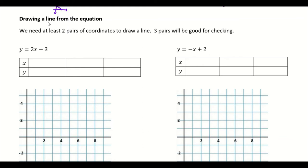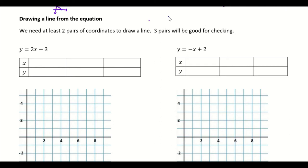To draw a line from an equation, we need at least two pairs of coordinates. With only one point, you could draw infinitely many lines with different gradients through it. So I need at least two points to connect and get a unique straight line. I encourage you to use three pairs of coordinates as a check — if the three points don't form a straight line, you know one of them is wrong.